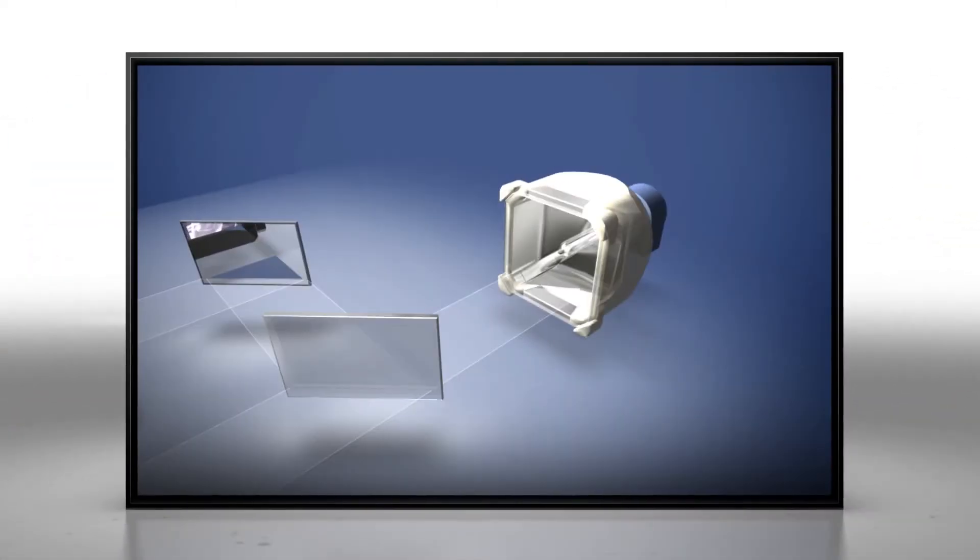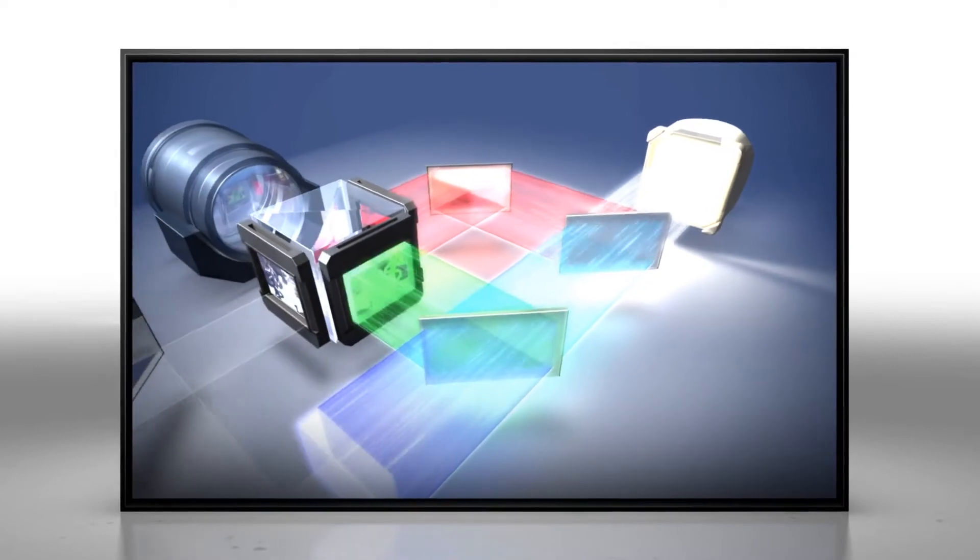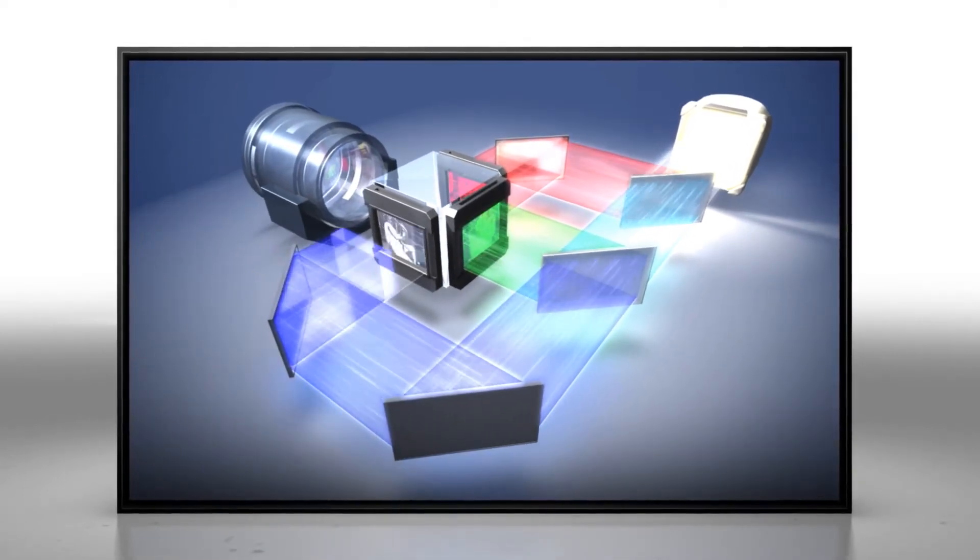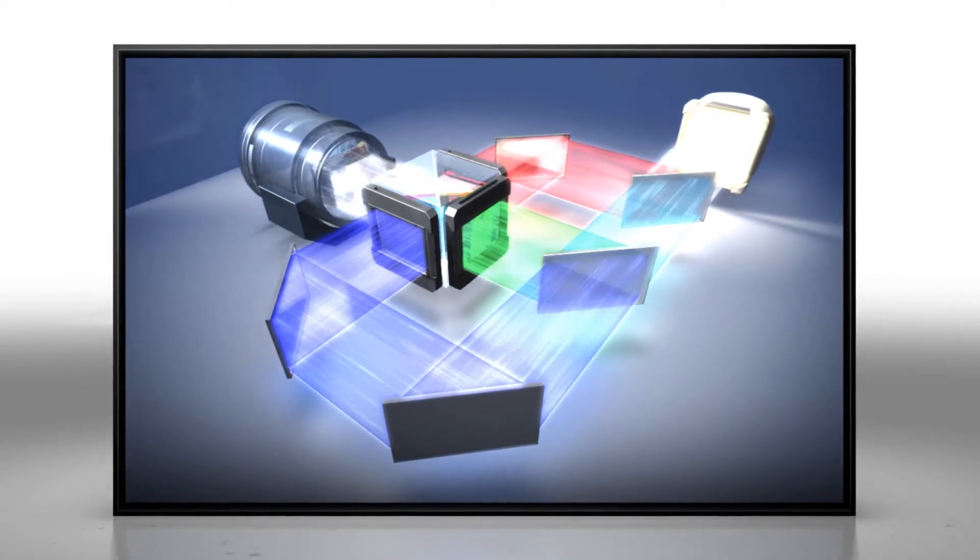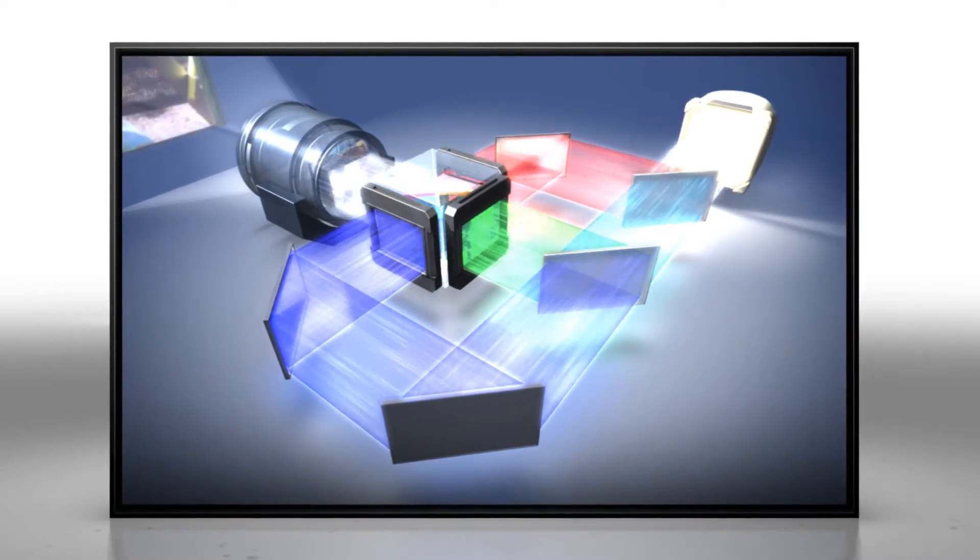The 3LCD engine efficiently divides light into beams of red, green and blue. Each of the three beams pass through a dedicated imaging chip, then are recombined to create the bright beautiful image we see on the screen. By using 3 chips, 3LCD projectors are inherently light efficient and create vibrant natural colors.